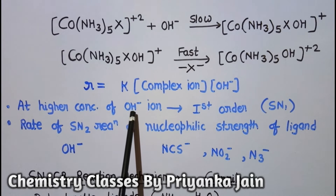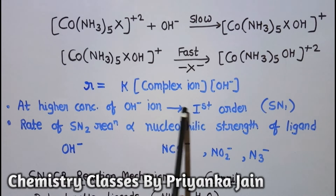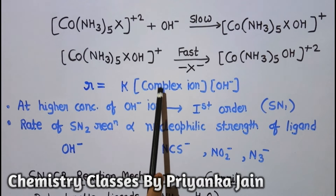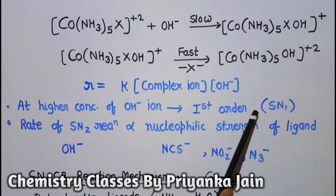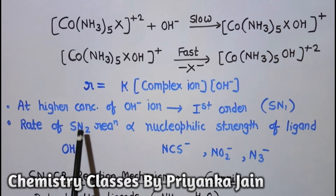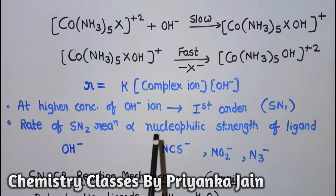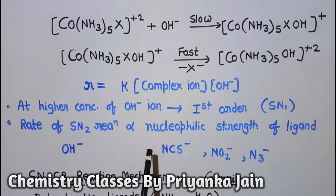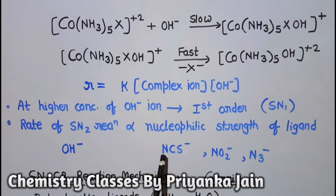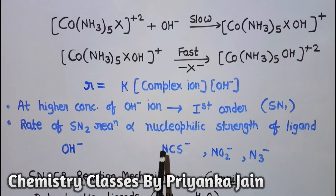But at higher concentration of OH⁻ ions, the reaction becomes first order — it no longer depends on the concentration of OH⁻ ions, only on the complex ion concentration, resembling SN1 behavior. Furthermore, the rate of SN2 reactions should be directly proportional to the nucleophilic strength of the ligand. However, when other nucleophiles like NCS⁻, NO₂⁻, and N₃⁻ are used instead of OH⁻, the rate still depends only on OH⁻ concentration, not on these other nucleophiles, despite their similar nucleophilic strength.